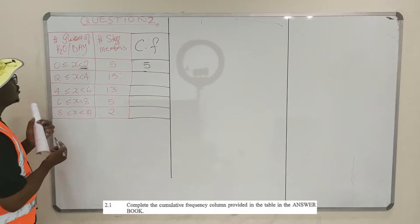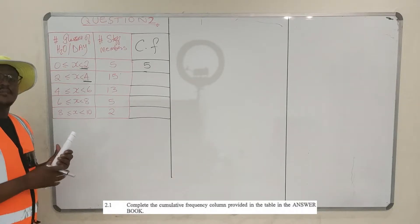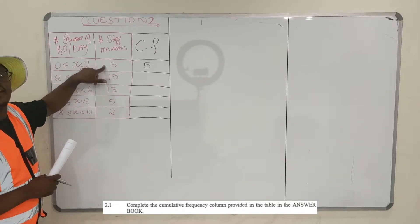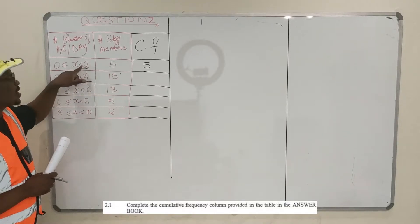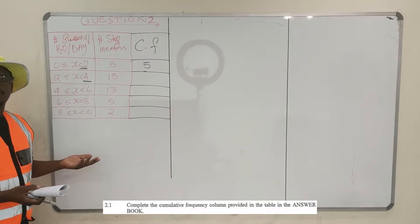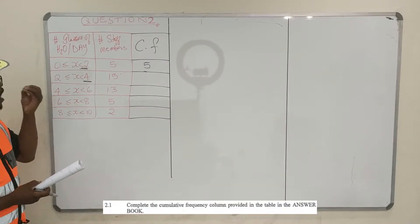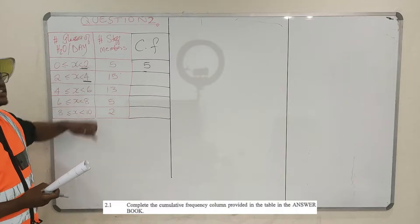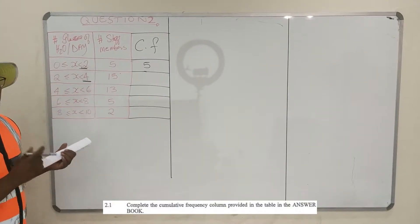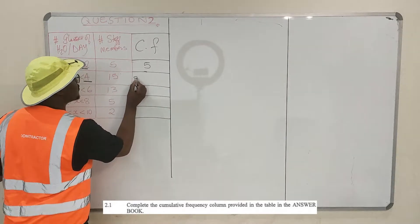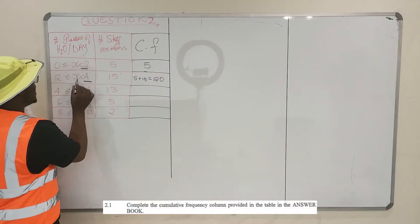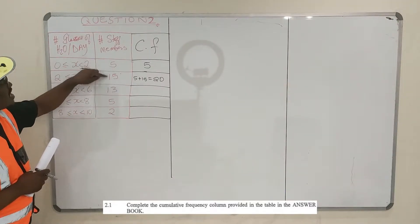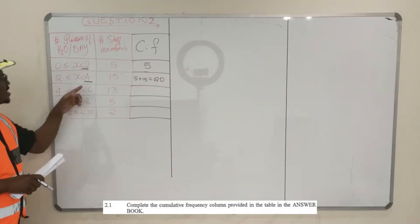Next, go to the next one. At this point you want to know how many staff members drank less than 4 glasses of water. You know there are 15 from this row, and also 5 from the previous row, because those 5 drank less than 2 glasses which is also less than 4. So the cumulative frequency is 5 plus 15, which is 20.